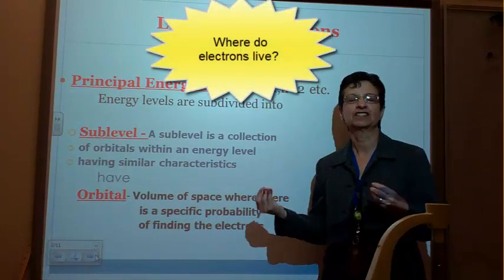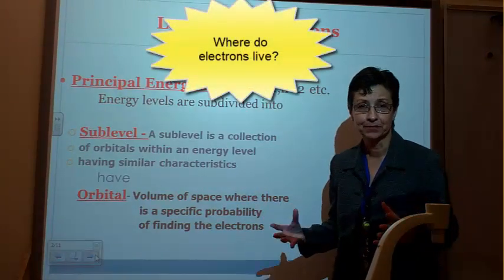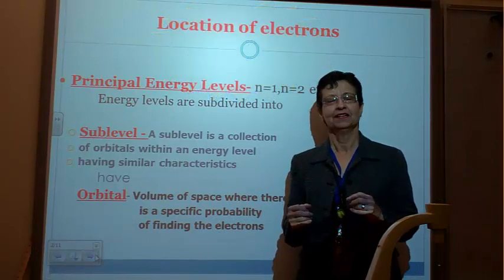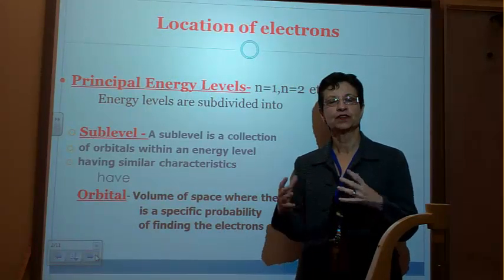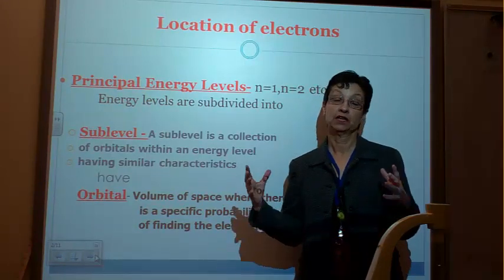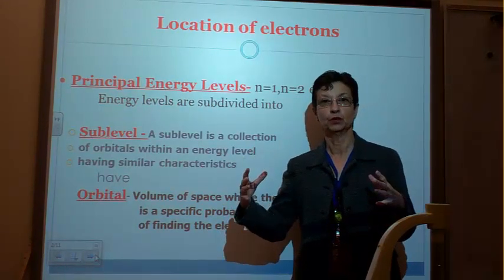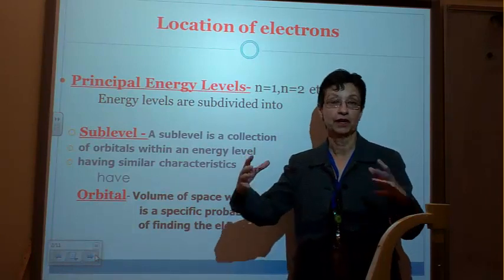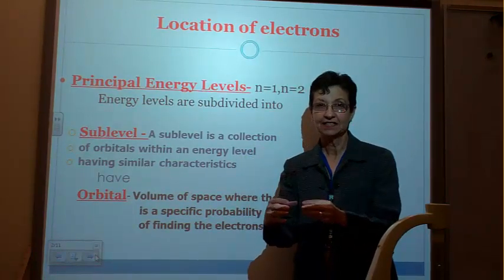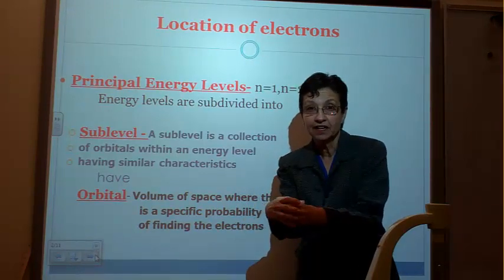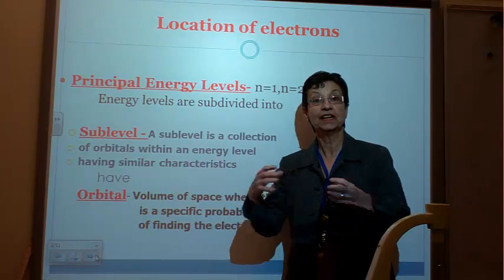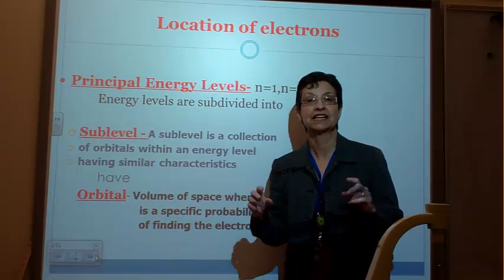We're going to discuss where electrons live, basically. You know a lot about the atom, and we're going to discuss where they live. For example, if we want to know where somebody lives, we have to know what country they live in, then if it's the US, we have to know what state, what city, what street, what number, so we can narrow it down. That's basically what we're going to do - we're going to narrow it down to find out where electrons live.